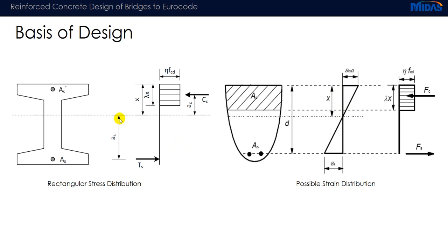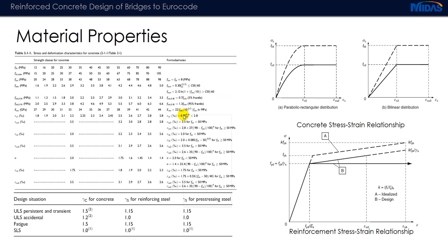In Midas, the bending moment resistance design is that of a singly reinforced section, to be conservative — reinforcement in the compressive zone is ignored. Material properties for concrete are taken from Eurocode 2, which specifies important material parameters for different concrete classes and the material safety factors to be used. The concrete stress-strain curve is rectangular in nature, which is more conservative and easier to calculate.